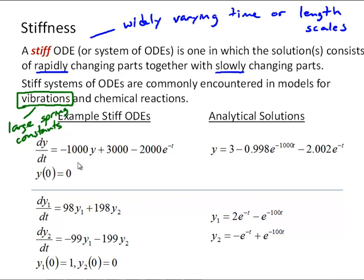Here are some examples of stiff ODEs. This first one is a single differential equation, dy/dt equals negative 1000y plus 3000 minus 2000e to the negative t. It might not be immediately obvious that it has widely varying time scales by looking at it.